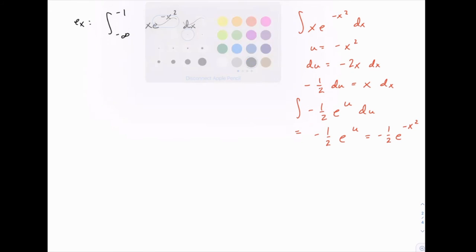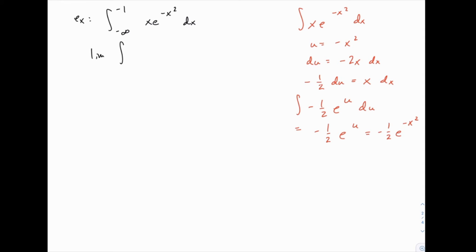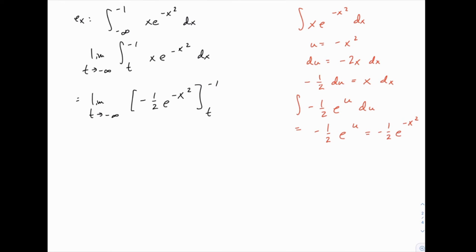Now we can turn our attention to the problem at hand, which is the infinite limits of integration — specifically negative infinity as the lower limit. We have an interval of integration that's infinite, which means we're dealing with an improper integral, and we need to use a limit and replace that infinite lower bound with t. Then we'll take the limit as t approaches negative infinity.